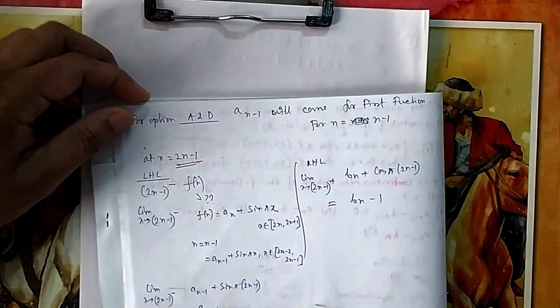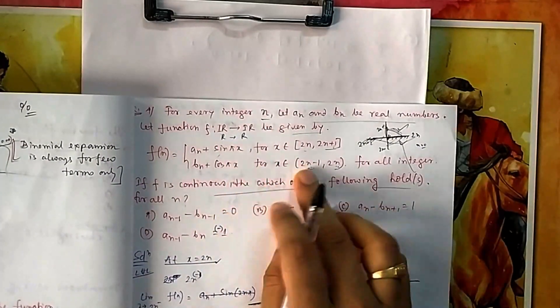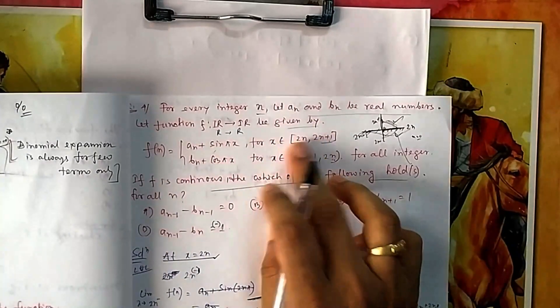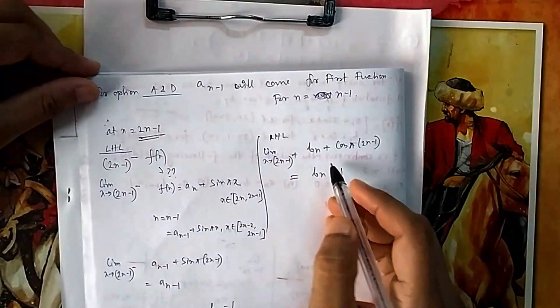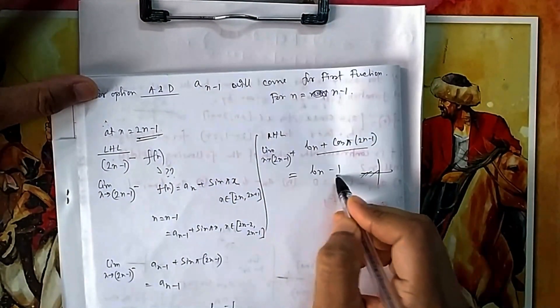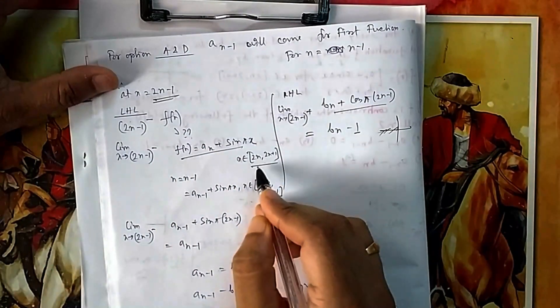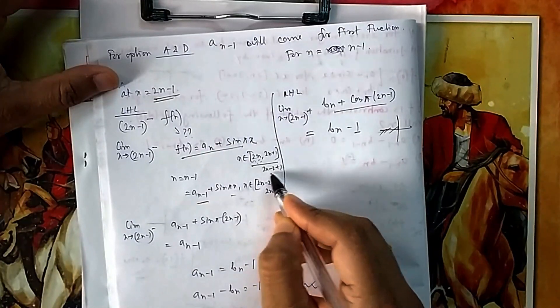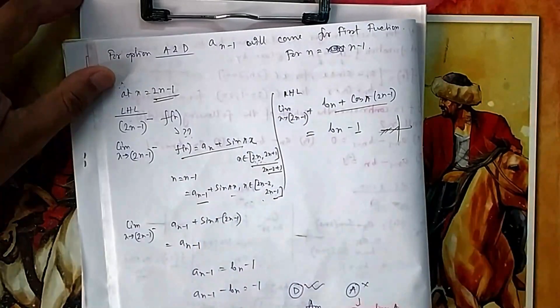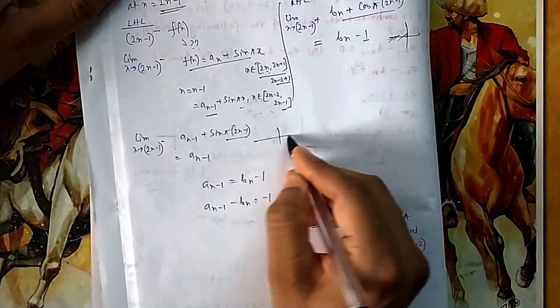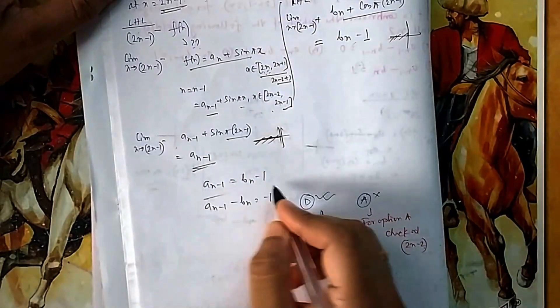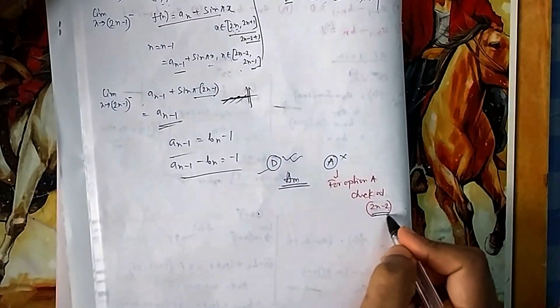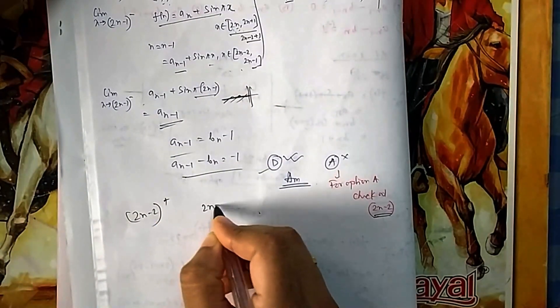For x = 2n-1: substitute n → n-1 in the first piece to get the expression near 2n-1. Evaluating sin at odd multiples of π gives 0 again, so the limits match, confirming option d is correct. Option a can be checked at x = 2n+2 and x = 2n-2 and will be found incorrect. Therefore the correct options for question 4 are b and d.